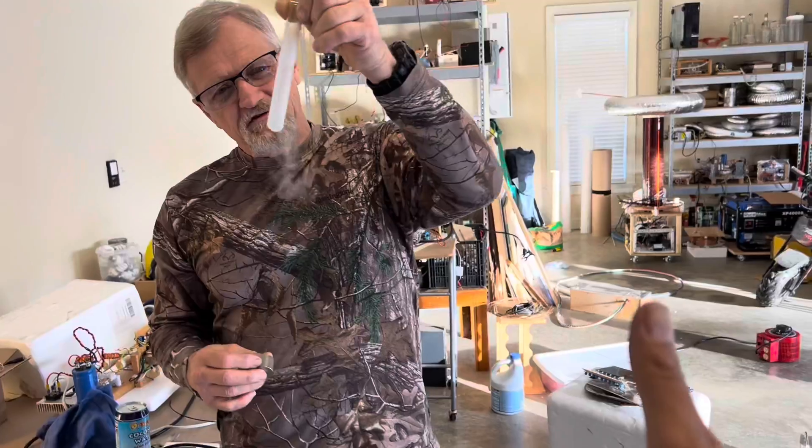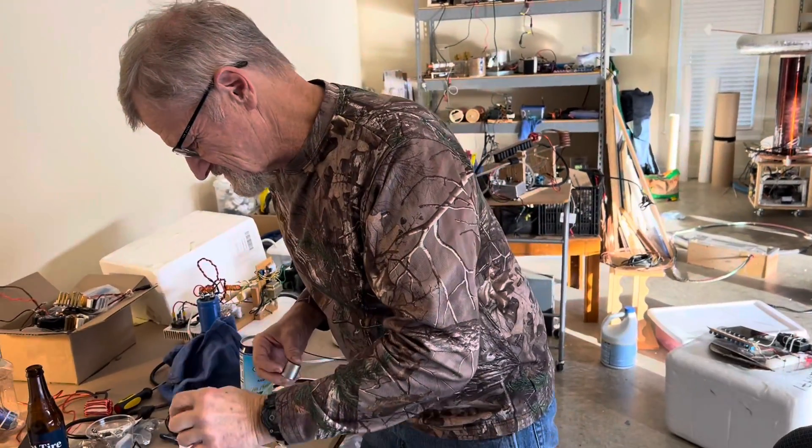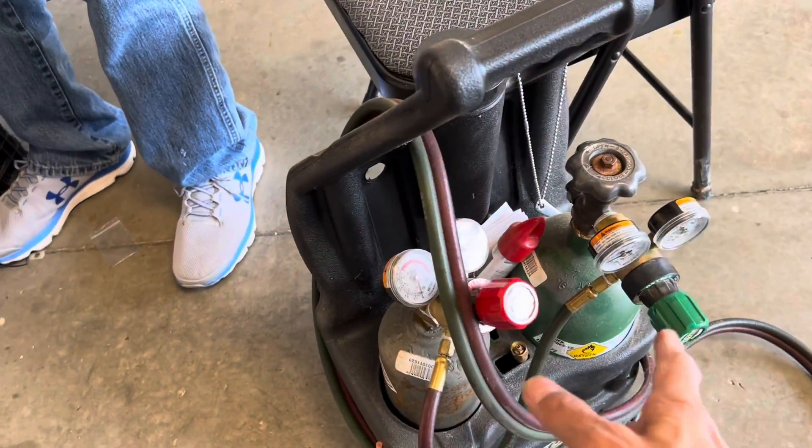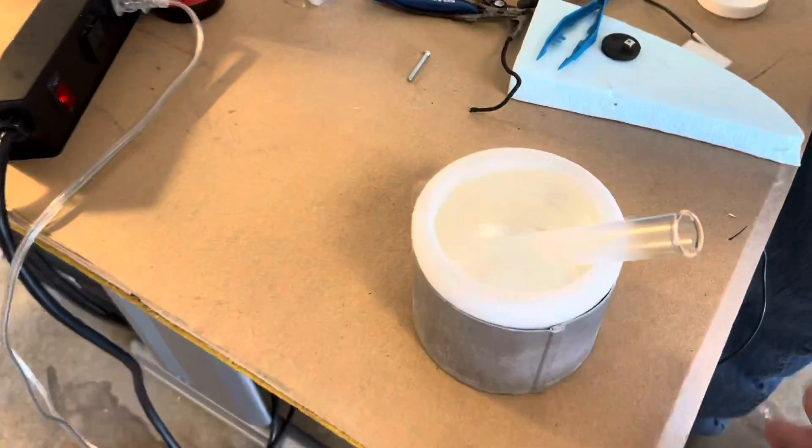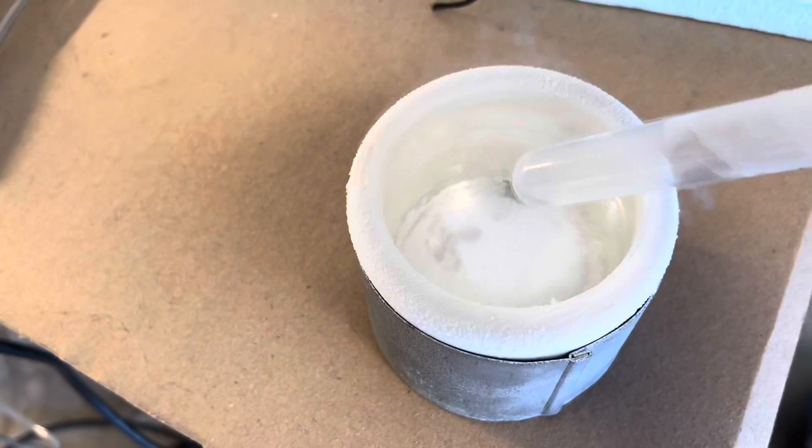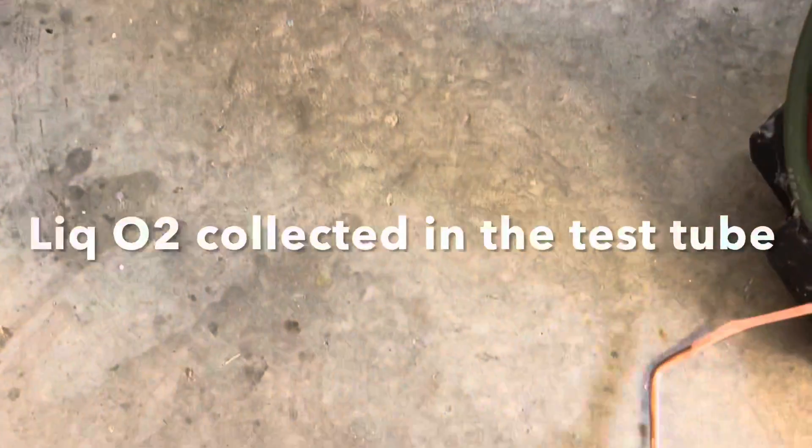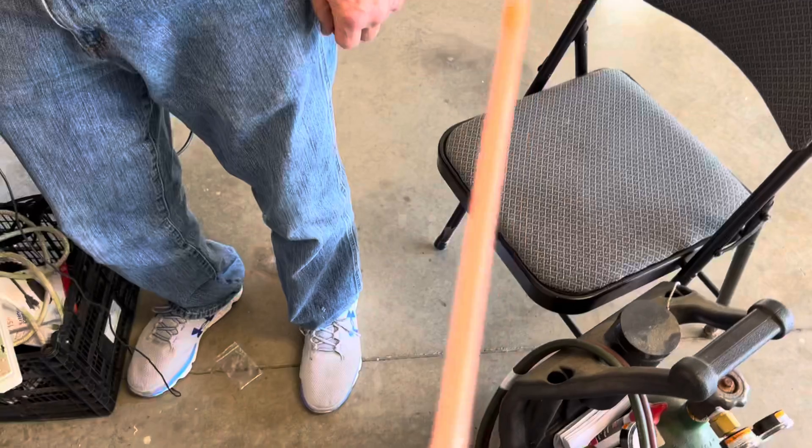How we got that liquid oxygen was using a welding tank oxygen supply and a dewar vessel full of liquid nitrogen. We blew the oxygen in through the welding torch.